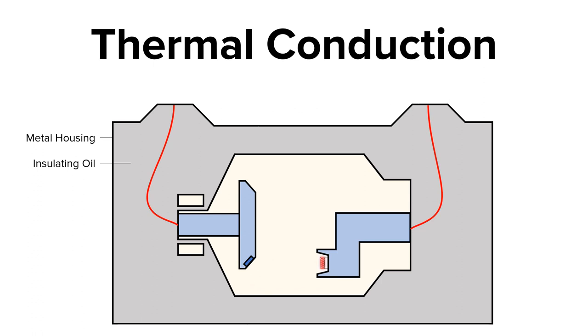Thermal conduction moves heat through direct contact. For example, heat from the anode target can travel through the anode neck, into the rotor, and out through the stator.